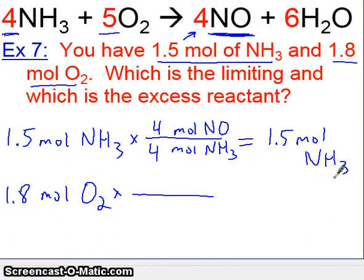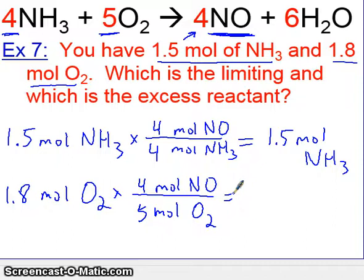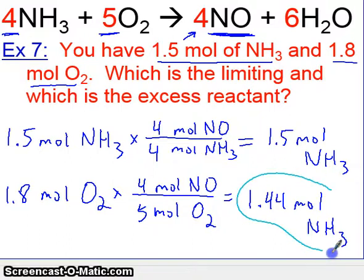Let's do the same thing for oxygen. We'll put moles of oxygen below and moles of NO. Notice we're converting to the same product in both cases. And we require 5 moles of O2 to produce 4 moles of NO. In this case, go ahead and do the calculation. We got ourselves 1.8 times 4 divided by 5, which gives us 1.44 moles of NO.